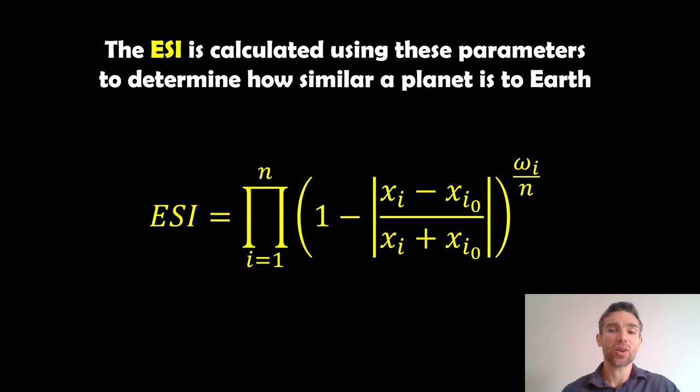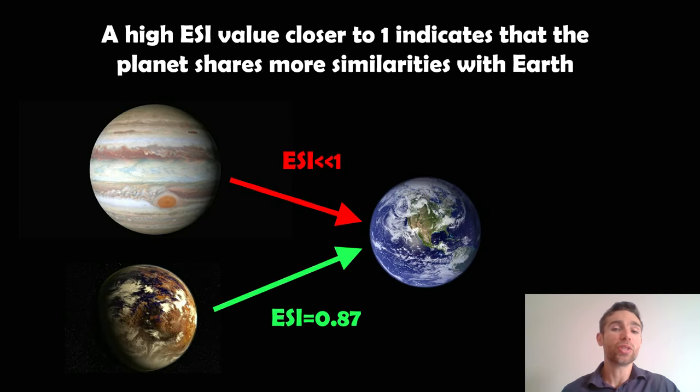So what does this equation look like? There's a few things going on here, but the ESI, the Earth similarity index, is given by this here. Now you have lots of parameters in there. You have some reference points and things like that. So we're going to go back to this and explain what those variables are. But what you typically get is you're going to get a value probably between zero and one. The closer to one that you get for your ESI, the more similarities that planet shares with Earth. If it was one, then it's pretty much Earth.